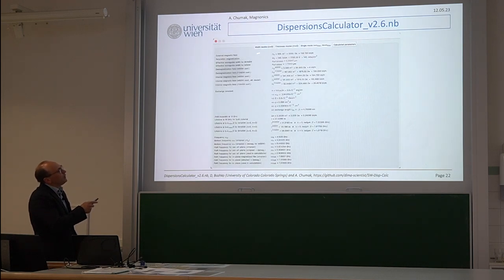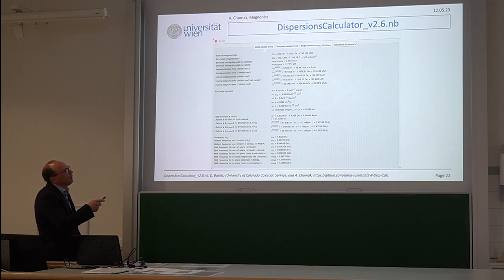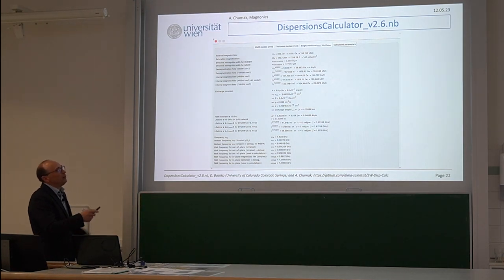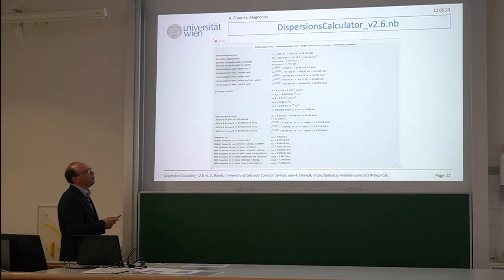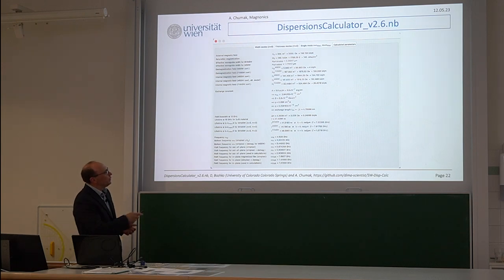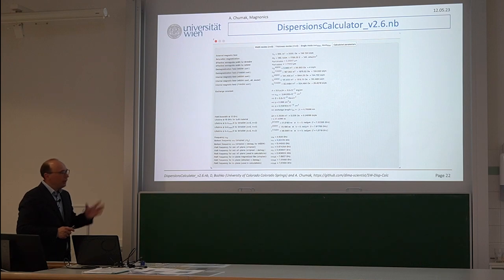There are helpful checkboxes: you can switch off demagnetization to understand what's going on, use effective width for backward volume or for MSSV, switch off anisotropy, and include or exclude ellipticity of precession in lifetime calculations. One checkbox gives you the simplest dipolar-only dispersion from the last lecture. Calculated parameters like internal magnetic field, exchange constant, omega_H, omega_M, and lifetime tau are also shown. So for quick-and-dirty analysis, this code can be helpful.